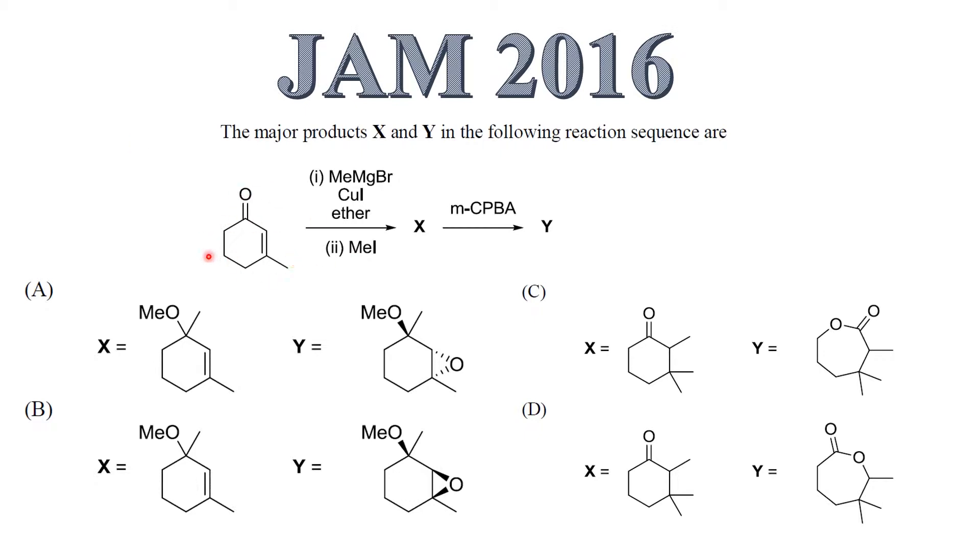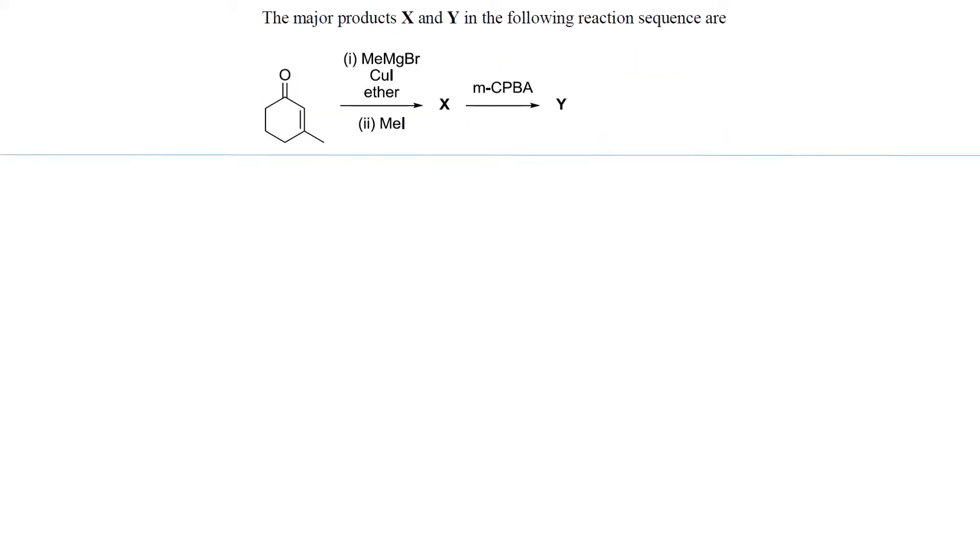This is one such problem. Here they have taken an alpha-beta unsaturated ketone and it was subjected to treatment with methyl magnesium bromide in presence of copper iodide, followed by treatment with methyl iodide, and it gave compound X which was then treated with metachloroperbenzoic acid which gave compound Y. So we are given four options and let's see how to approach a question like this.